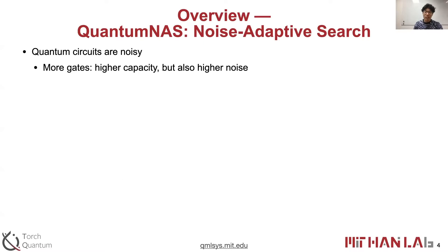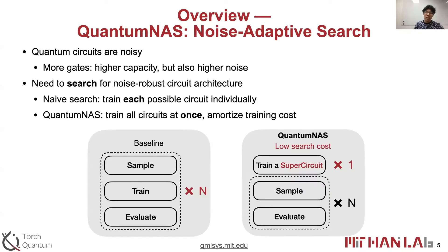Current quantum circuits are noisy. For parameterized quantum circuits, more gates can bring higher capacity but also introduce more noise. Therefore, we need to search for noise-robust circuit architectures. For the naive search, we have to train each candidate circuit individually and then select the best one, which incurs significant search cost. For QuantumNAS, we propose to train all kinds of circuits at once by training a super circuit, amortizing the training cost.